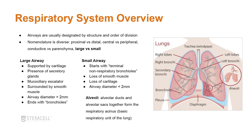To begin, the airways are usually designated by structure and order of division. The nomenclature is diverse — proximal versus distal, central versus peripheral — but in this presentation I'm going to refer to them as large or small airway. The large airway is supported by cartilage, contains secretory glands and the mucociliary escalator, is surrounded by smooth muscle, and the airway diameter is quite large. The large airway ends with the bronchioles.